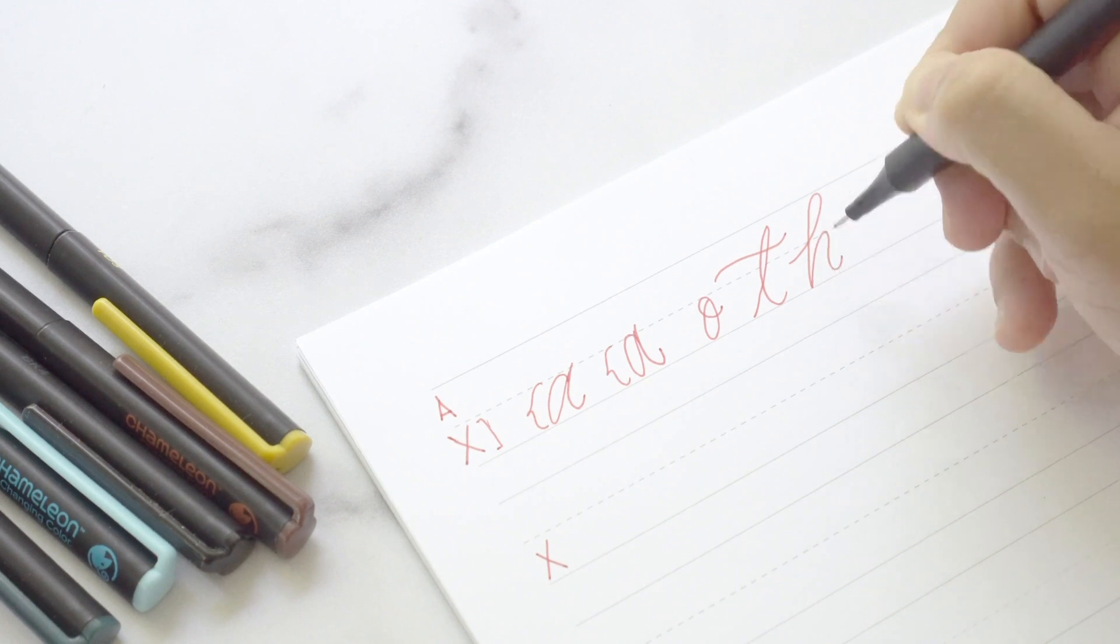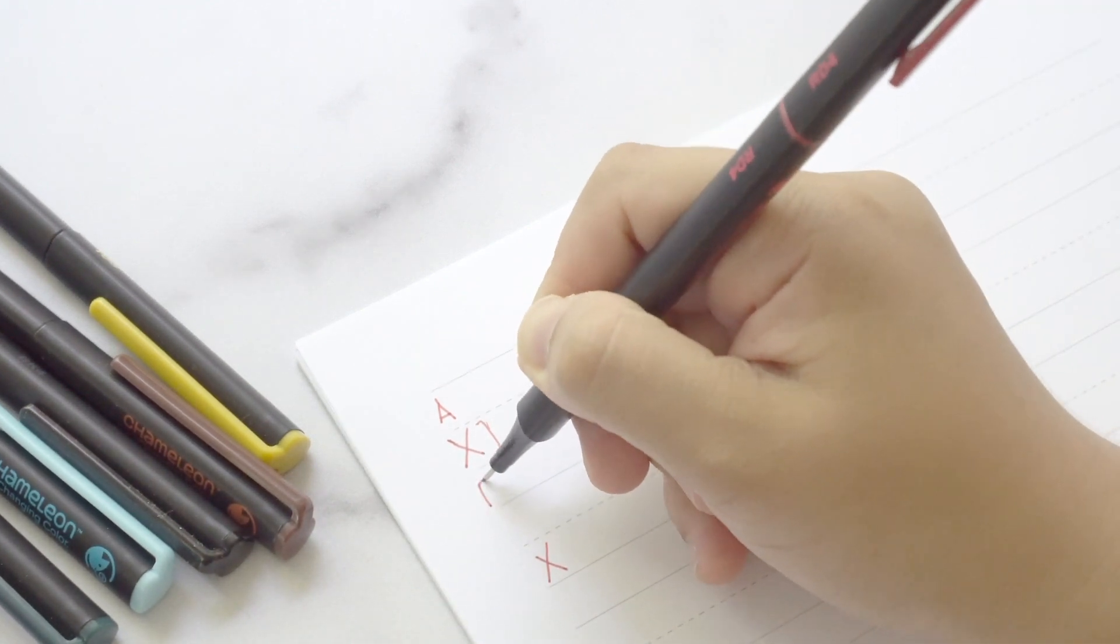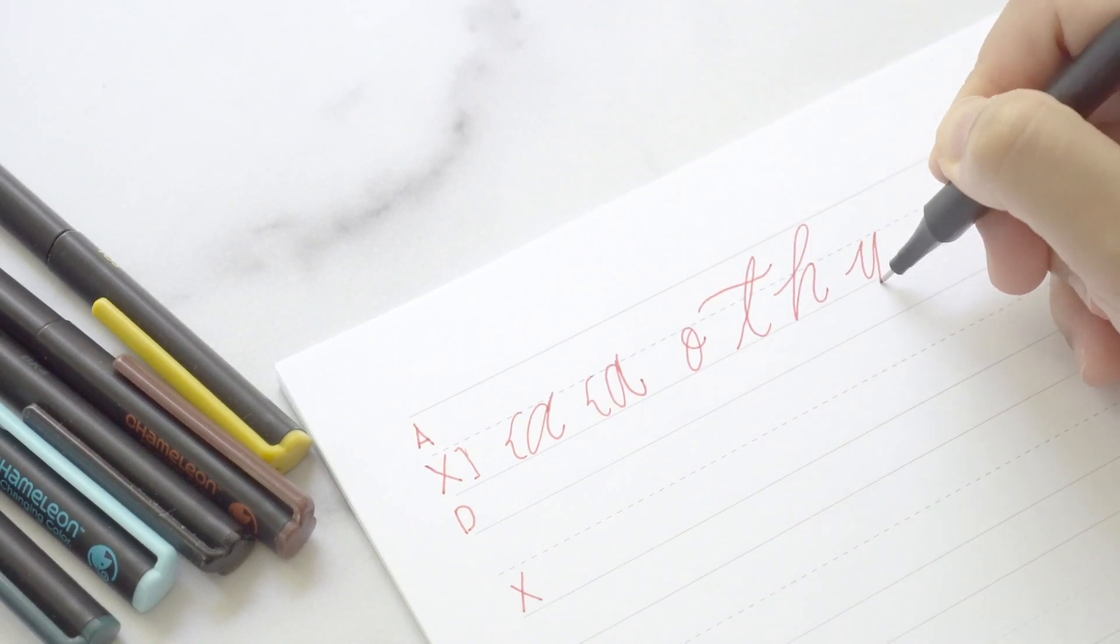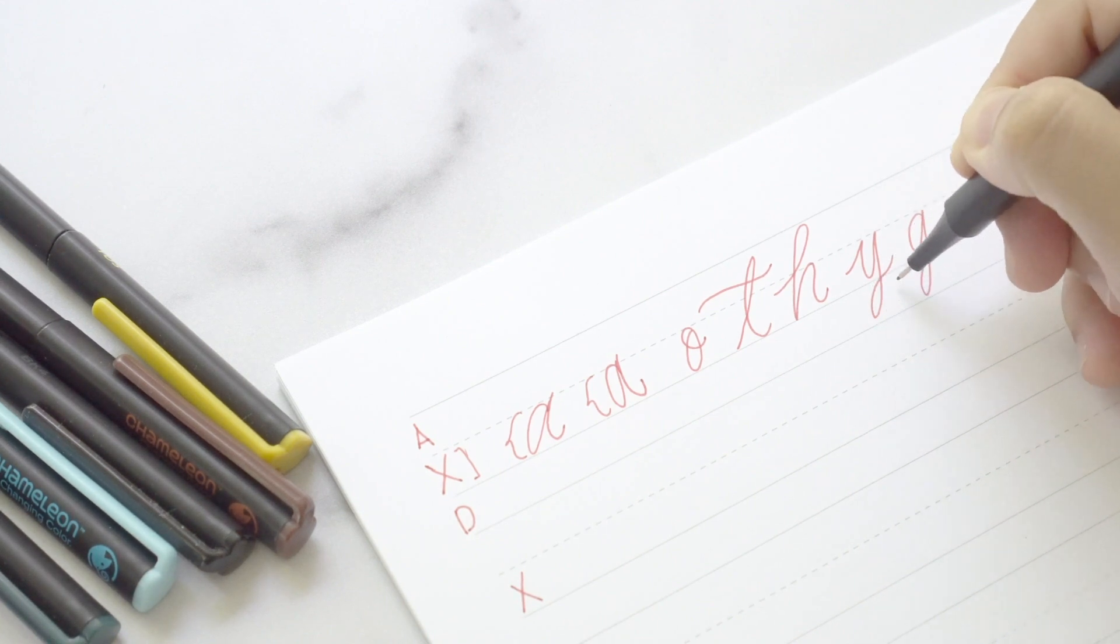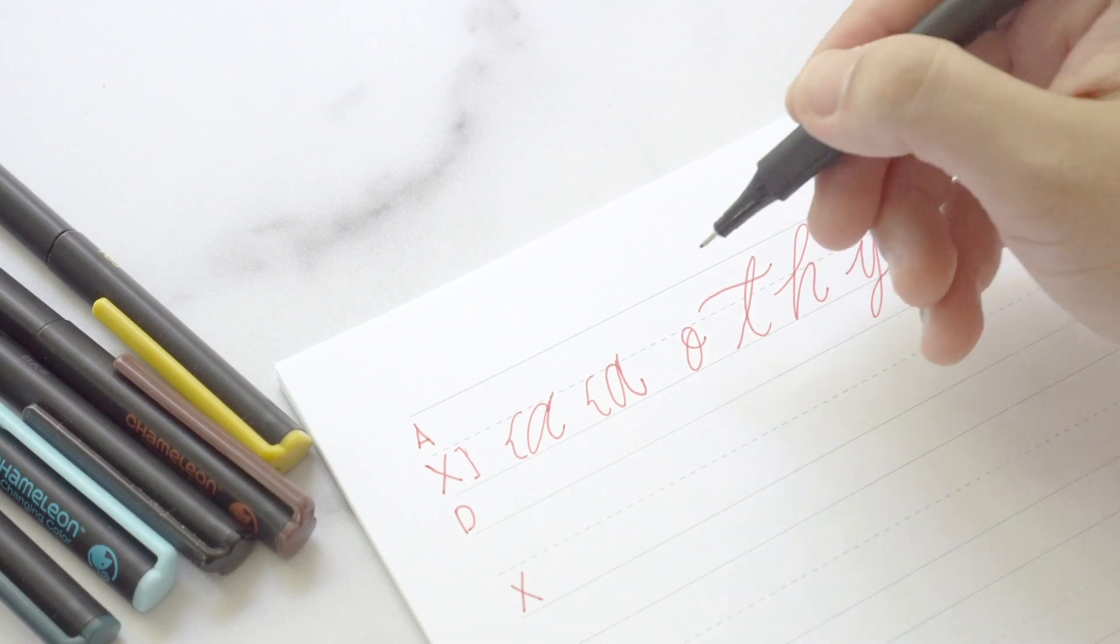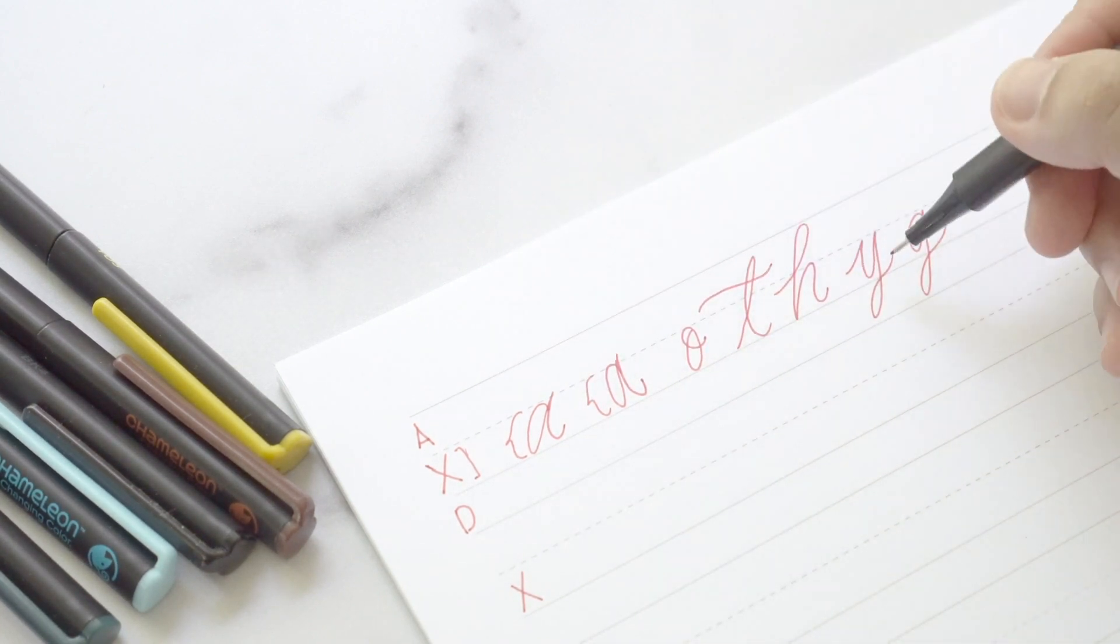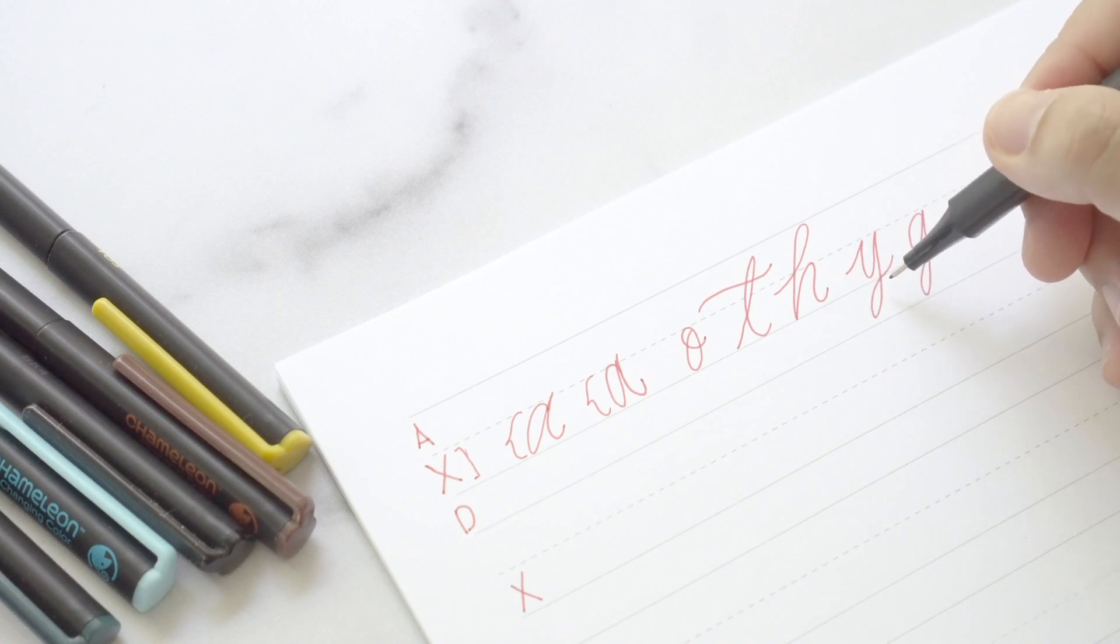And then at the bottom, this is what you call the descender line. So letters like the letter Y, G, that extends towards that portion over there. So if it's on the ascender line, this area is called an ascender, and this area is what you call a descender.